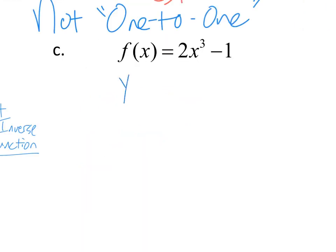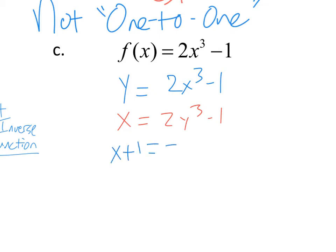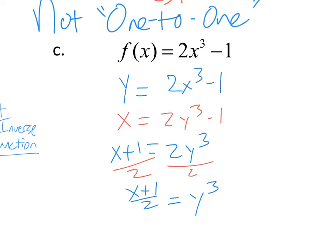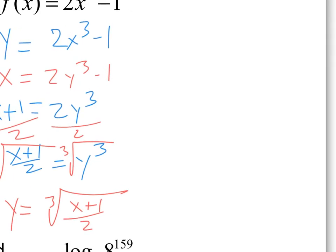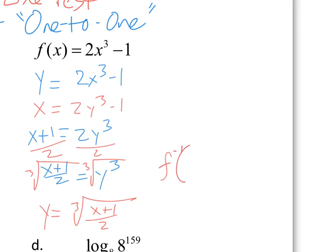One more inverse. Write it with a y instead of f of x, swap the x and the y, and solve for y. Add 1, then divide by 2 everywhere, giving us x plus 1 over 2. Then take the cube root of that. We get y equals the cube root of (x plus 1) all over 2. That is a function, so the inverse of f is the cube root of (x plus 1) all over 2.